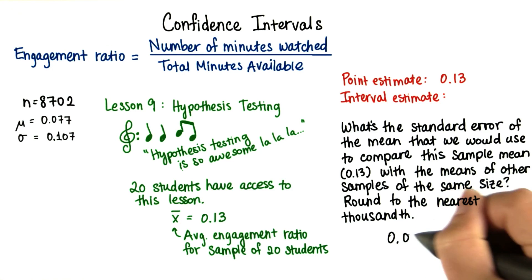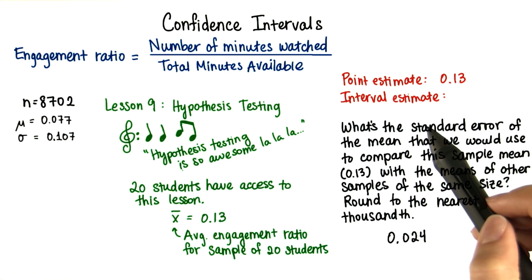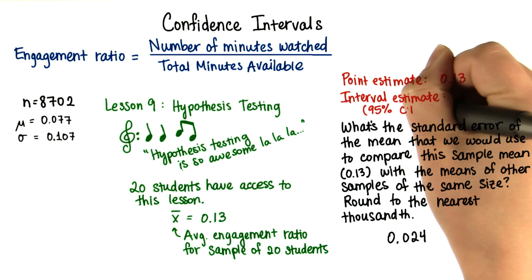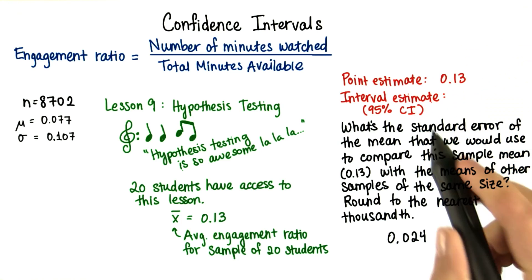So we found that the standard error is 0.024, but we still need our interval estimate. Let's say that we want a 95% confidence interval, abbreviated CI for short.